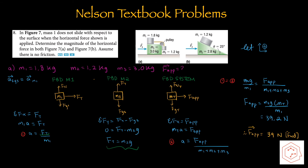For the free body diagram of the system, the only net force in the x component is the applied force, so F_applied = (m1 + m2 + m3) × a. Setting the two acceleration expressions equal — m2·g/m1 = F_applied/(m1 + m2 + m3) — and isolating for applied force, we get 39 N in the forward direction.